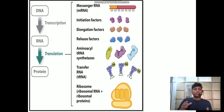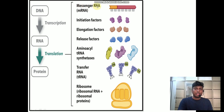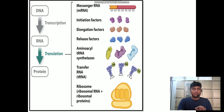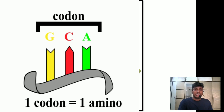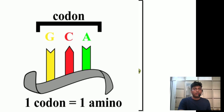Let us understand what exactly translation is. The RNA is going to help in the formation of proteins, but the translation process is a very complex process because many things are important for it. As you can see on the screen, there is something called mRNA — messenger RNA. Messenger RNA contains the information of proteins, that is the amino acids, because proteins are made up of amino acids. This information is present inside a set of three nucleotides called a codon, and every codon has the information of one single amino acid.